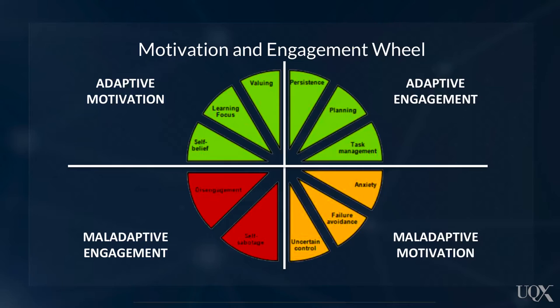It's also important to note that one can be motivated but not necessarily engaged in a learning episode. Andrew Martin's motivation and engagement wheel graphically represents the distinction between 11 cognitive and behavioural factors represented as adaptive motivation, adaptive engagement, maladaptive motivation and maladaptive engagement.